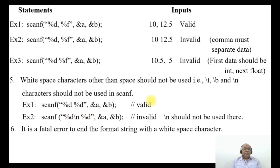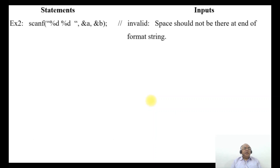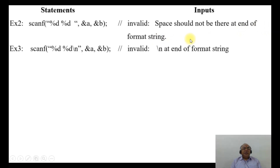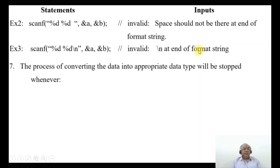Rule 6: it is a fatal error to end the format string with a whitespace character. For example, scanf("%d %d ", &a, &b) — having a space at the end of the format string — is invalid. Similarly, scanf("%d %d\n", ...) with \n at the end of the format string cannot be used.